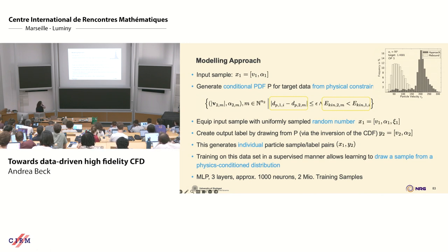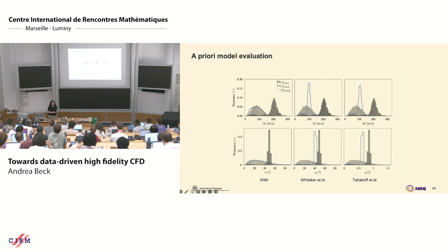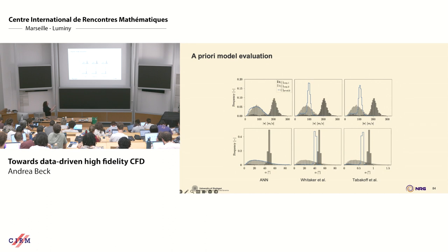Here are some examples. We used a very small MLP — three layers, a thousand neurons — with two million training samples from experimental data. Evaluating the model a priori: the classical models fail here as well. In our approach, the blue is the model prediction and the light gray is the actual measured particle distribution. It essentially shows the success of the supervised learning. We also did a posteriori tests, running the whole particle wind tunnel as an LES computation — the whole thing meshed up, a nice jet coming out, hitting the plate.